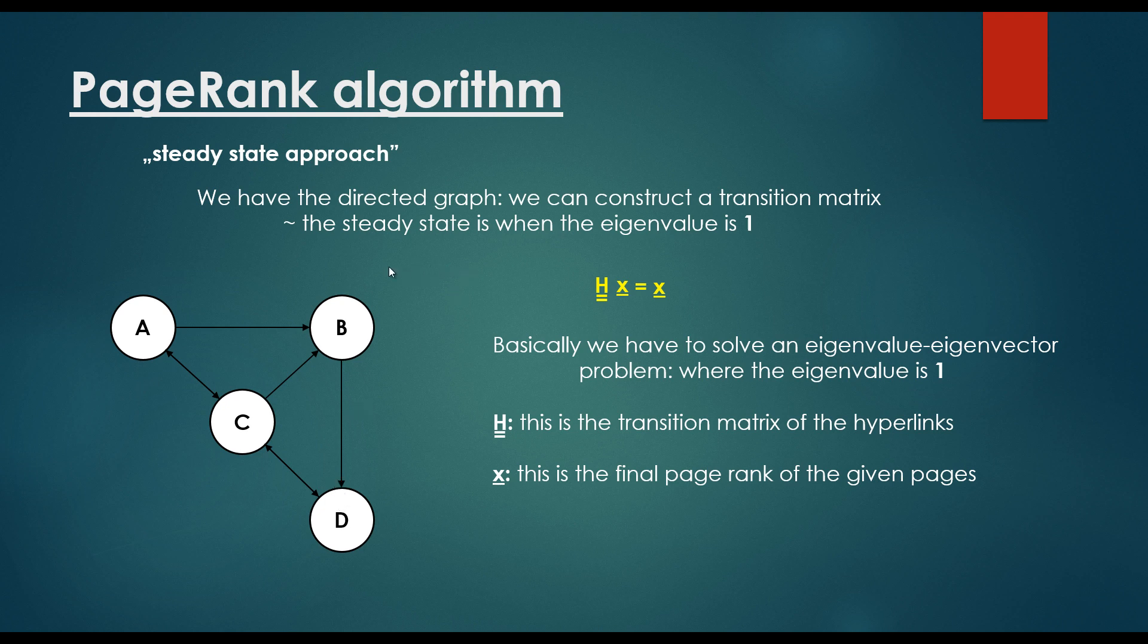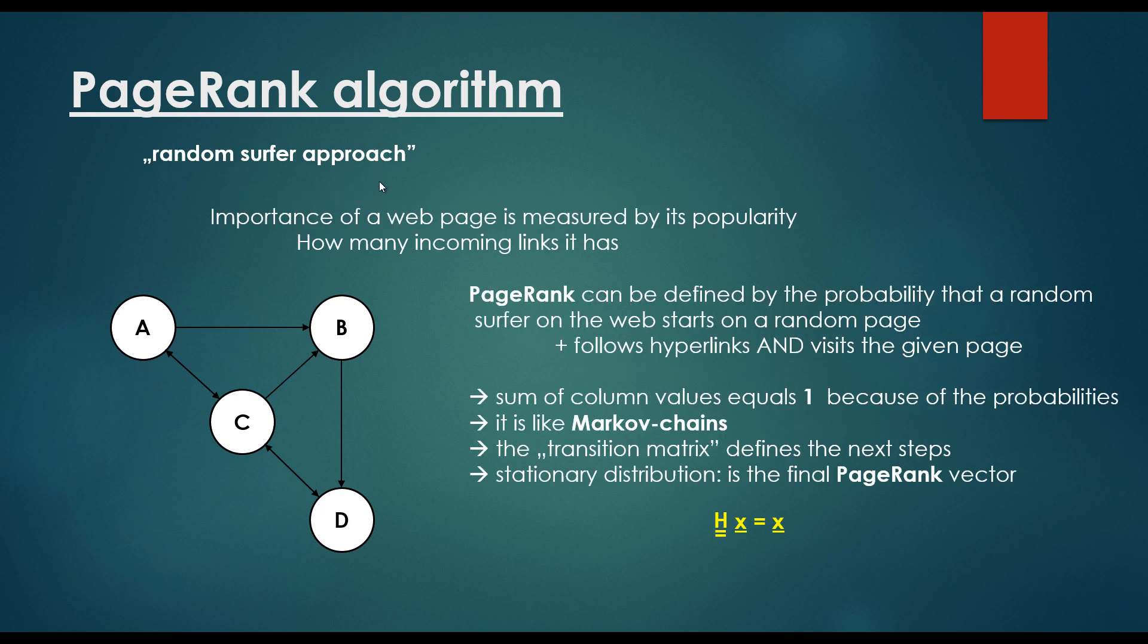The first entry of the vector will be the page rank for the first website. The second value in the eigenvector will be the page rank for the second website, and so on. So that's all about the steady state approach and the random surfer approach.